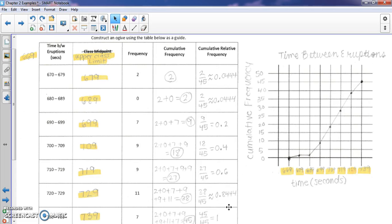And then in ogive, we're going to use the upper class limits and either cumulative frequency or cumulative relative frequency, depending on what we want to portray.